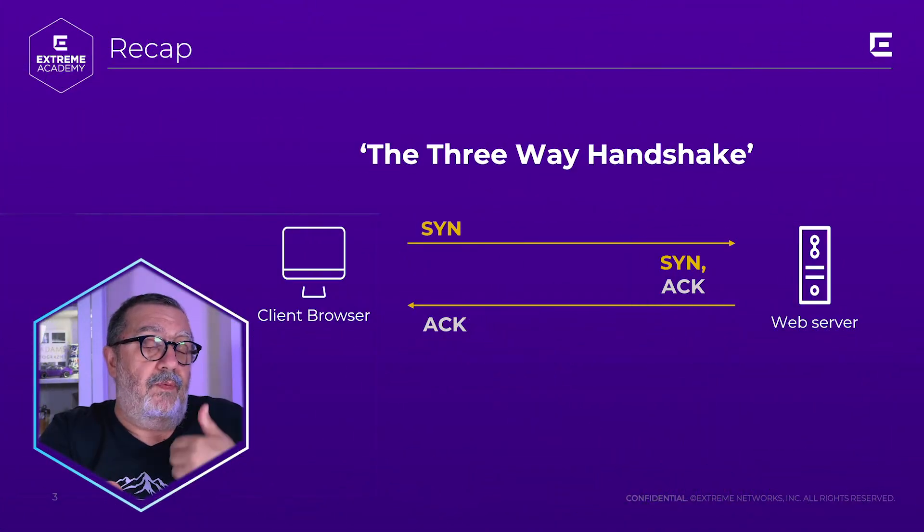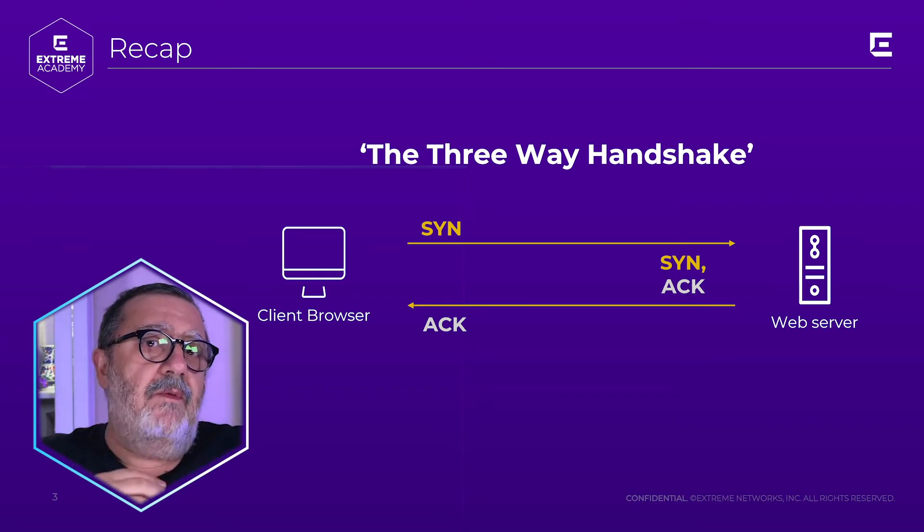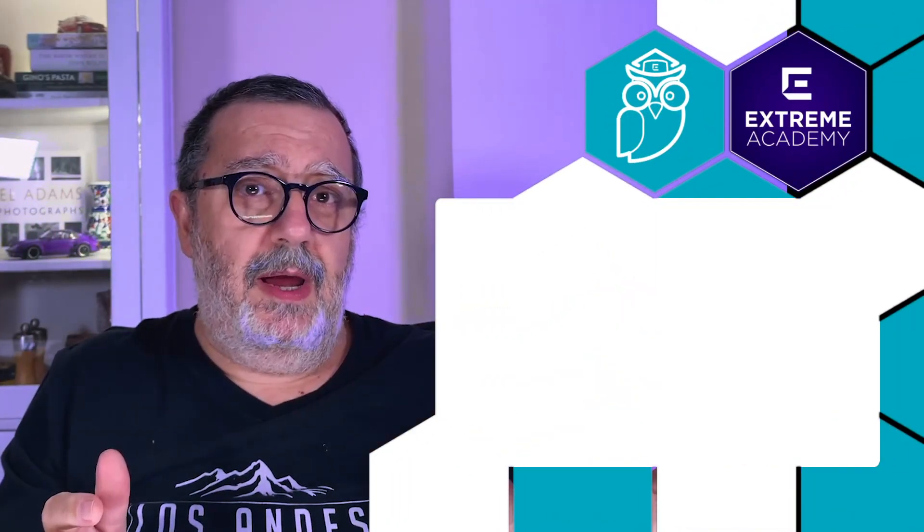So I send a SYN, and the server sends a SYN-ACK. When I get it, it shows it received 10,000 and is now looking for 10,001. And it sent its own SYN with a random sequence number — let's say 60,000. So I then acknowledge the server's sequence number, and I say: I now acknowledge packet 60,000, and I'm now ready for packet 60,001. And from that point onwards, every packet that goes between our two machines will have a sequence number incremented by one. That is called the three-way handshake.